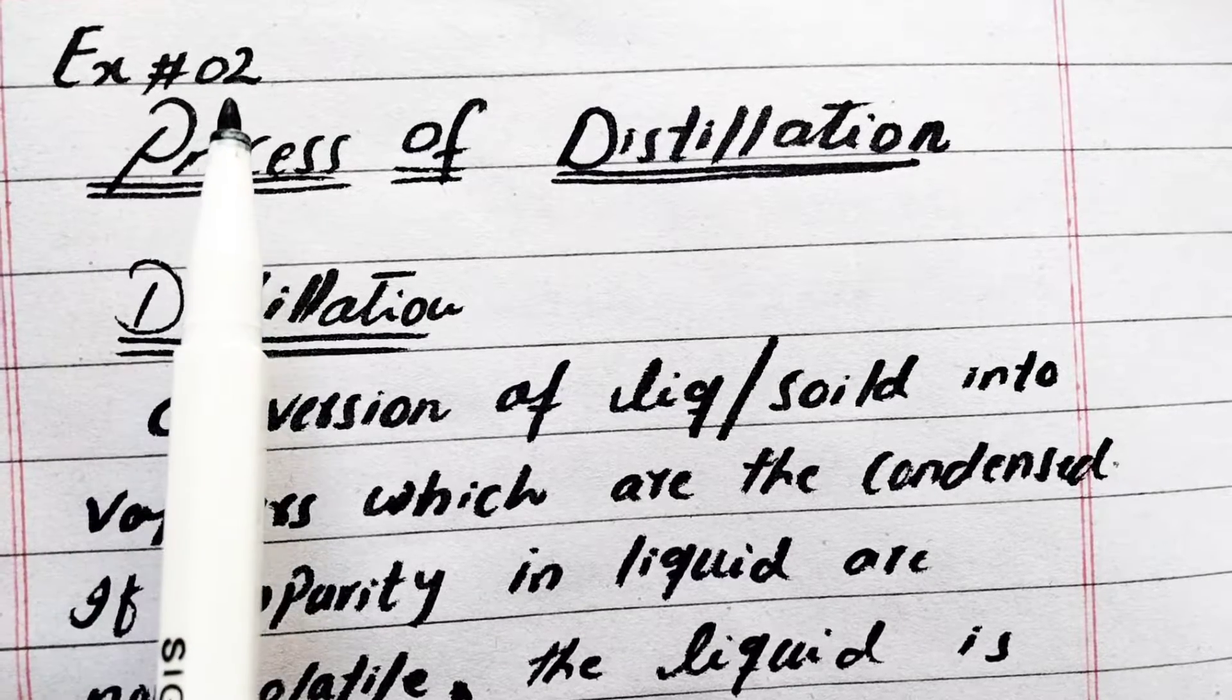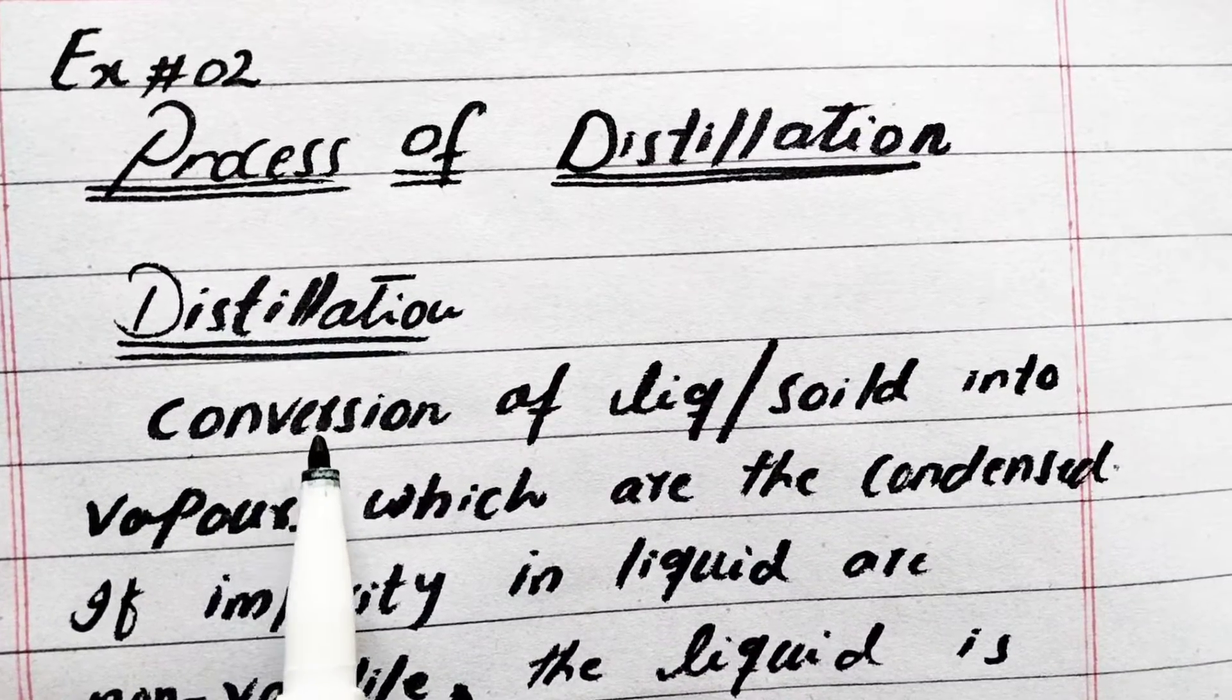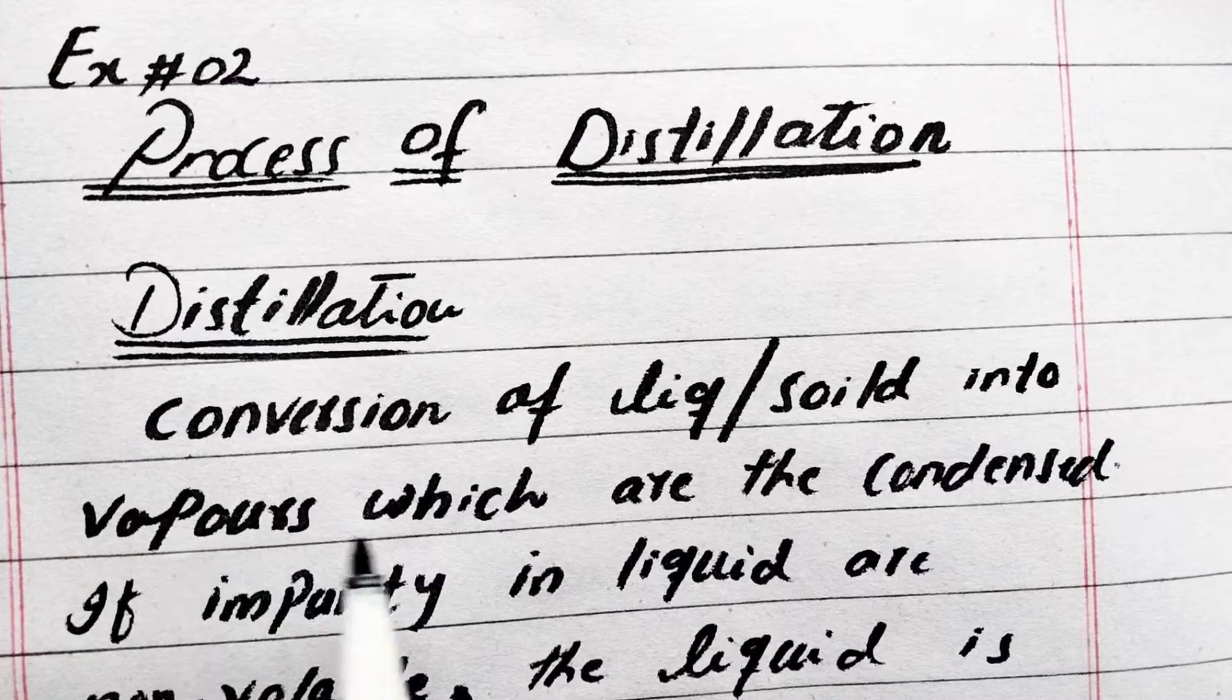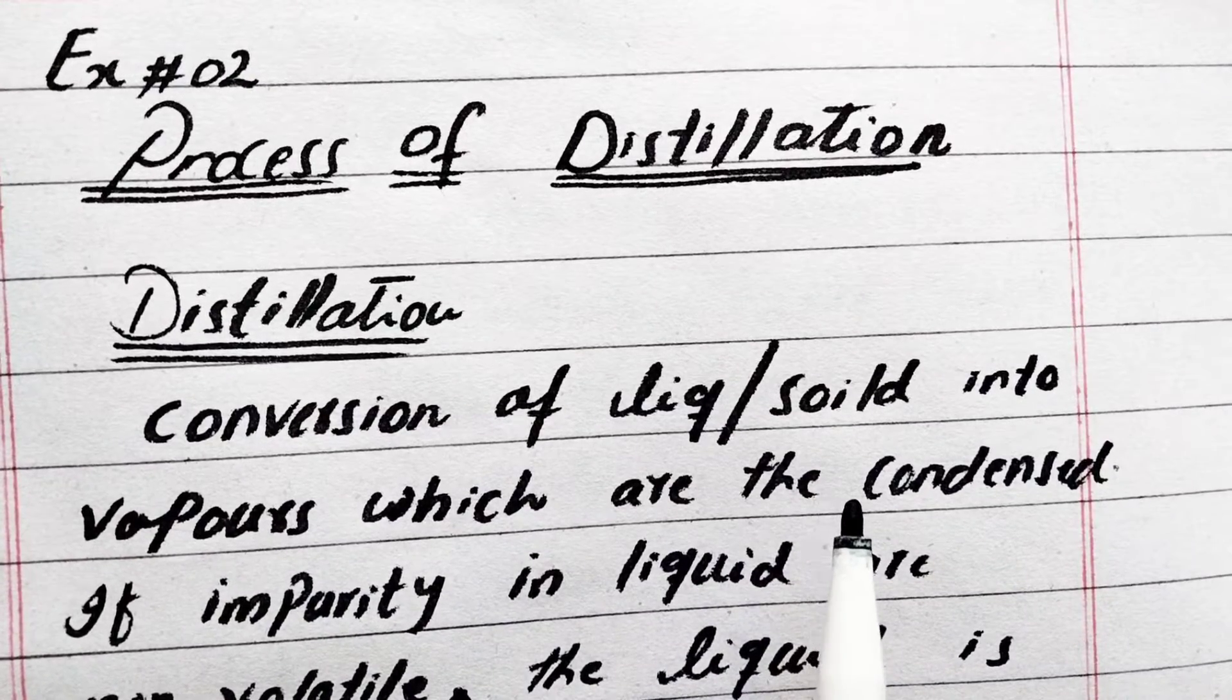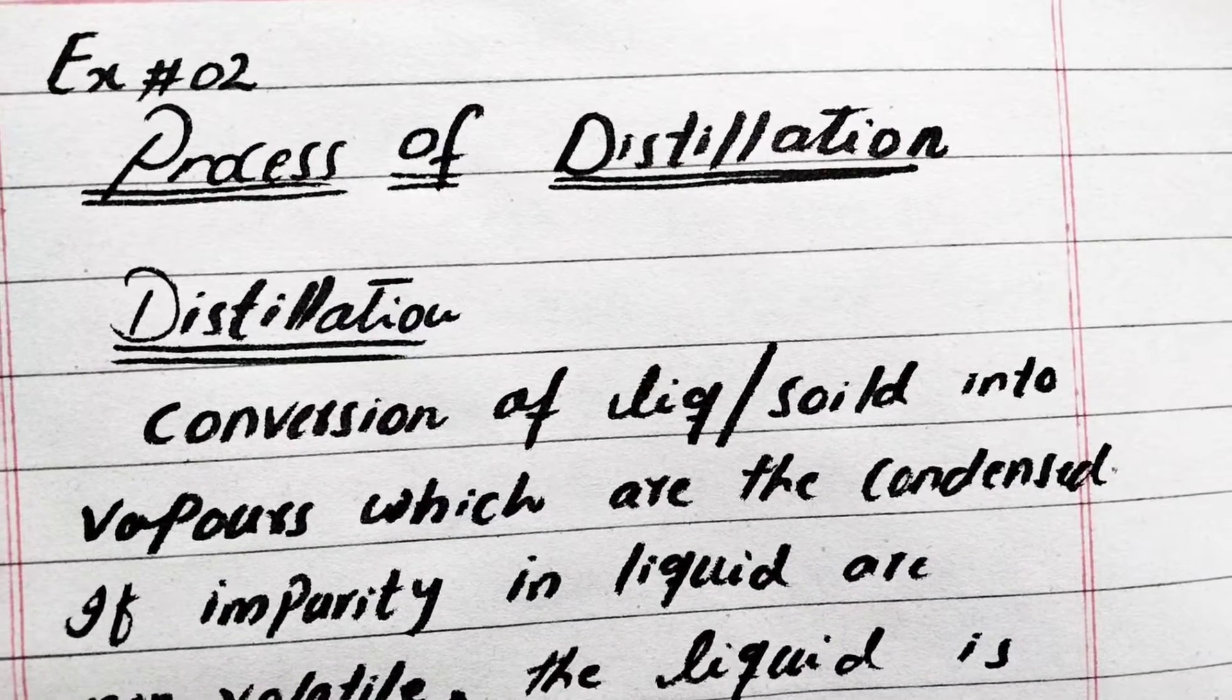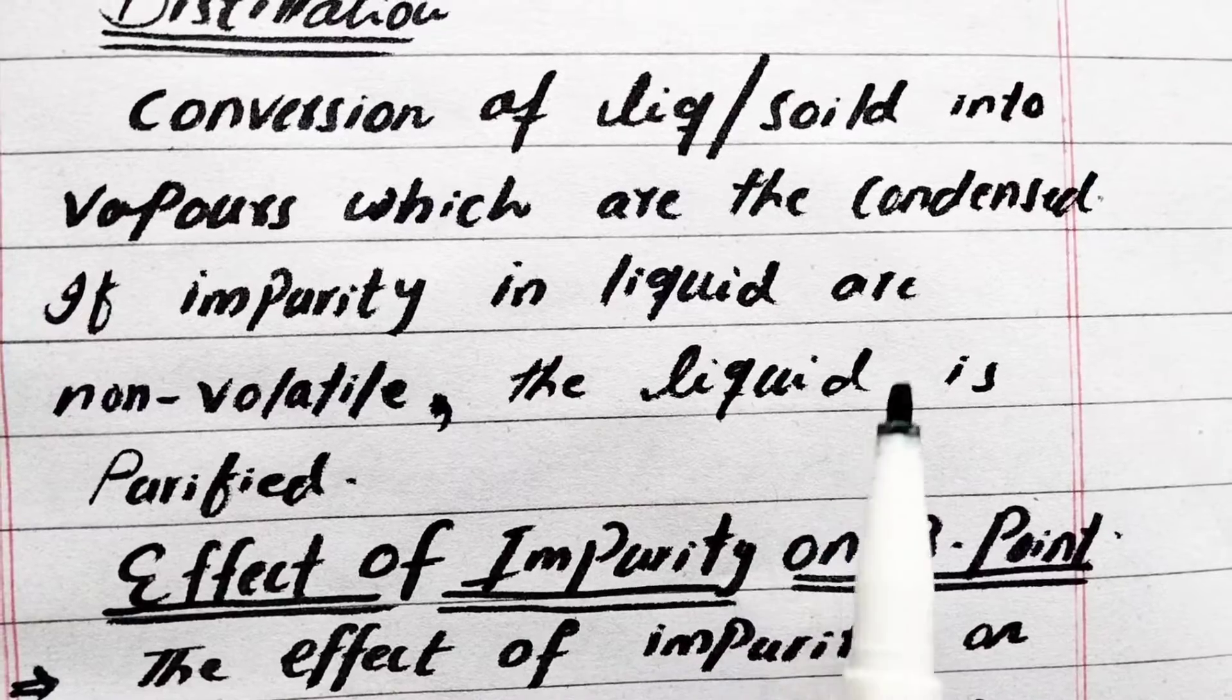Today we will discuss experiment number two: process of distillation. What is distillation? Conversion of the liquid or solids into vapors, then these vapors are converted into liquid again after condensation. If impurity in liquid are non-volatile, the liquid is purified.